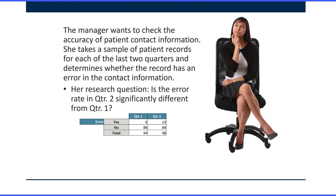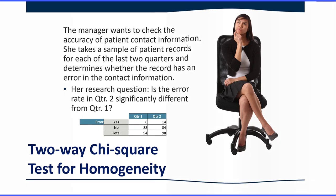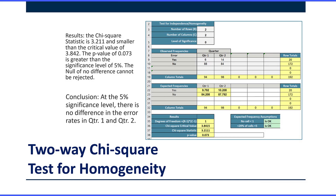Finally, she thinks that there are too many errors being made in patient contact information. She gets a sample of patient records for this quarter and last quarter, and she wants to answer the question: is the error rate in quarter two significantly different from quarter one? She can answer this with a two-way Chi-square test for homogeneity. She runs that test and finds at the five percent significance level there's no difference in the error rates for these two quarters.